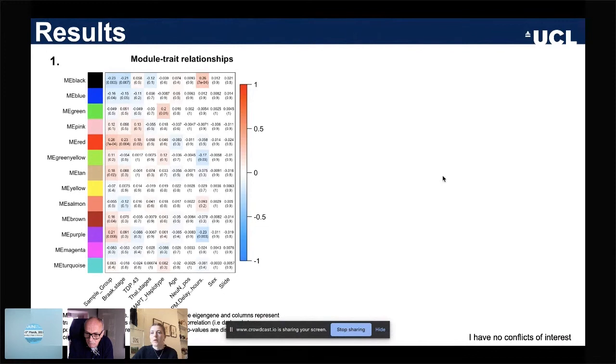We found 13 clusters of highly correlated CpGs, i.e. co-methylation modules, and we assessed the relationship of the modules we found with various traits including disease status. These associations are shown here in this first plot, where modules are shown as rows and traits as columns.